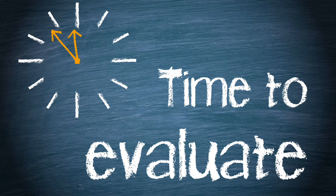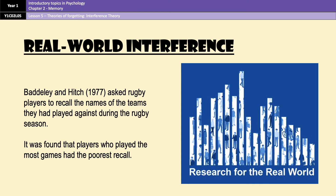We're going to move on to the evaluation points now. I've got three for you: one strength and two limitations. I'll talk you through the short versions first, then you can pause on the written paragraphs which come a little later. Starting with real-world research: Baddeley and Hitch in 1977 got a group of rugby players to recall the names of teams they'd played against during a specific season. All players had played for the same time interval, but the number of games varied because some missed matches due to injury. Players who played the most games had the poorest recall, showing that interference can account for at least some forgetting in the real world.